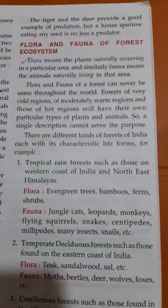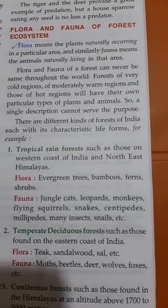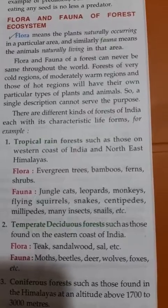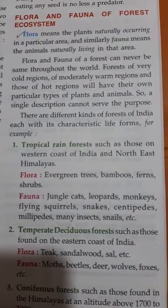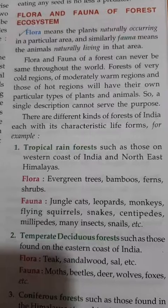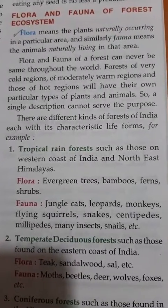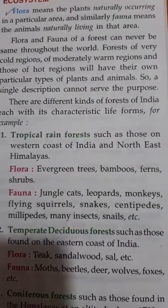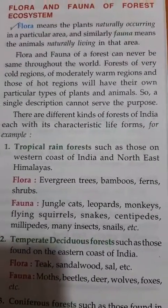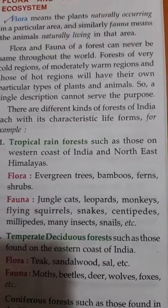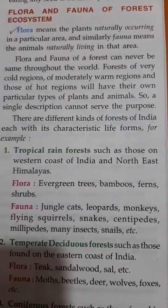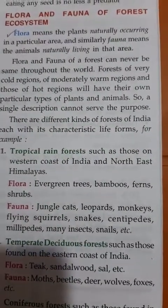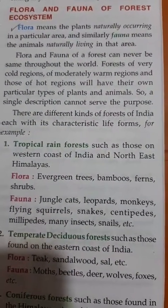Some forests are in very cold regions, some in moderately warm regions, and some in very hot regions. So because of the temperature, all the animals and plants in these different forests will be different. There are different kinds of forests in India with their own characteristic life forms — different types of flora and different types of fauna.